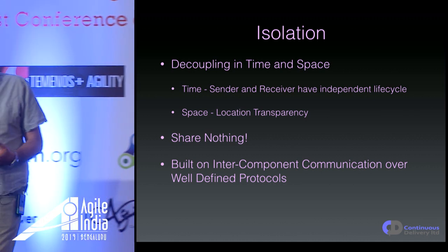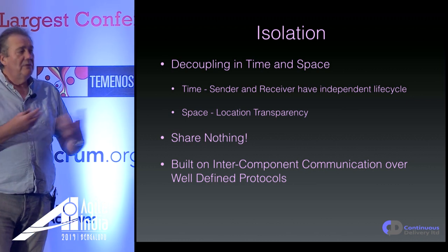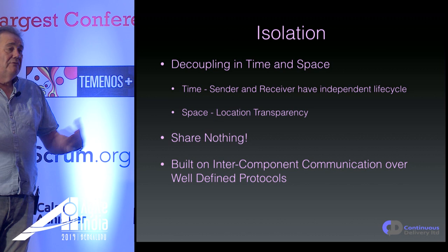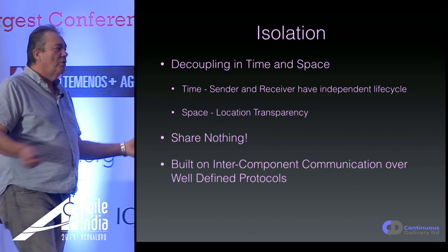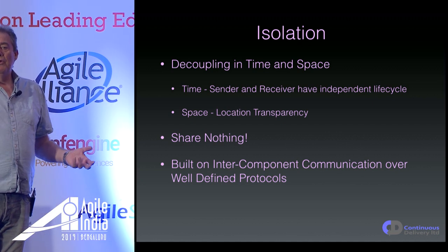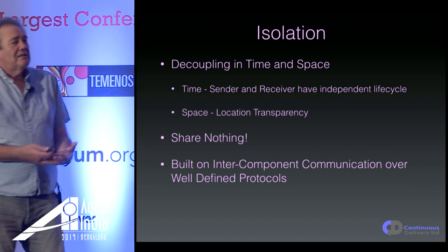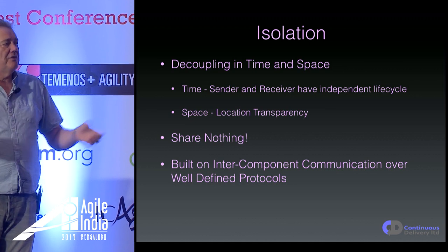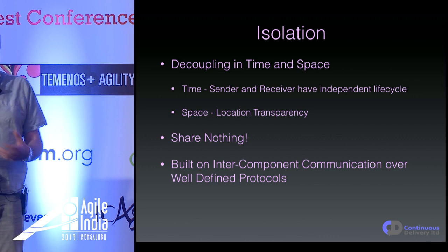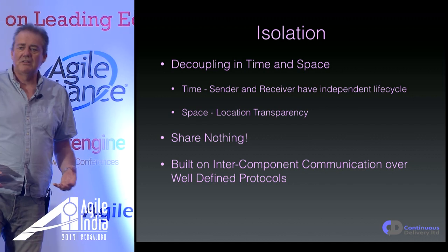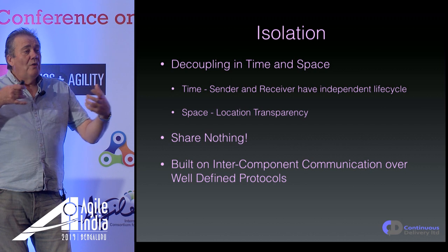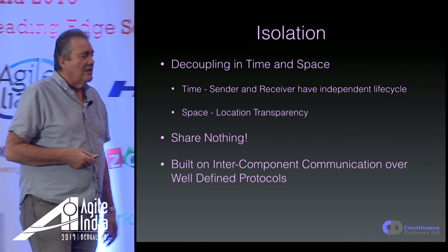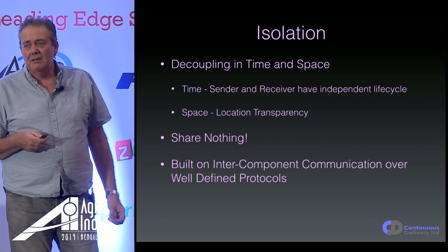So isolation: this approach decouples the components of your system in both time and space. You don't need things to be available at the same time, at the same rate. And you don't really care where they are — if the messaging is PubSub-style or broadcast-style, you just send the message and something's going to process it. This architecture depends on a few base principles: you don't share anything other than via messaging, there are no back doors, no shared databases. This is where it's very strongly aligned with the microservice model.